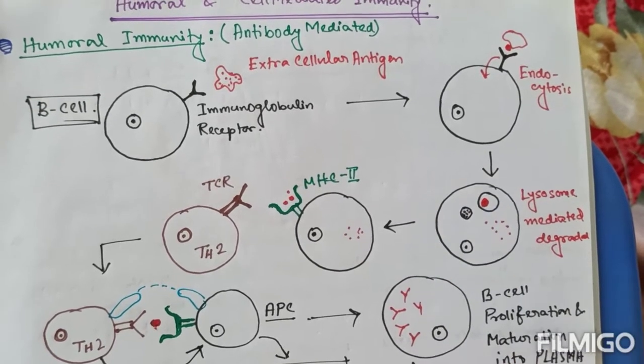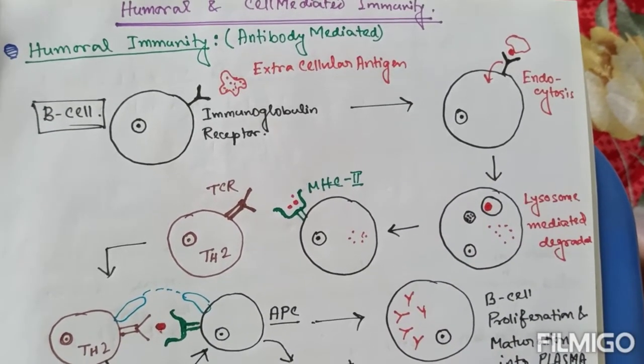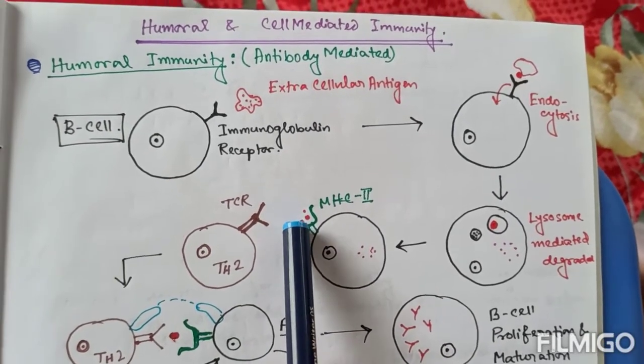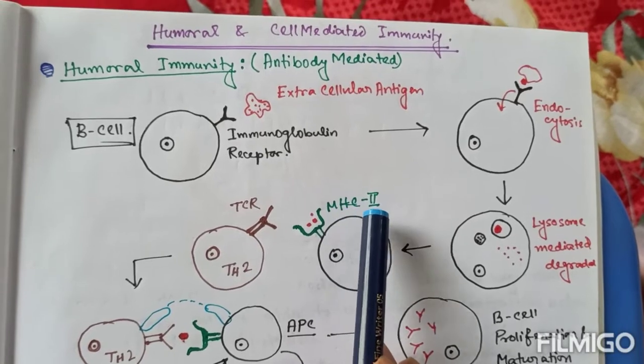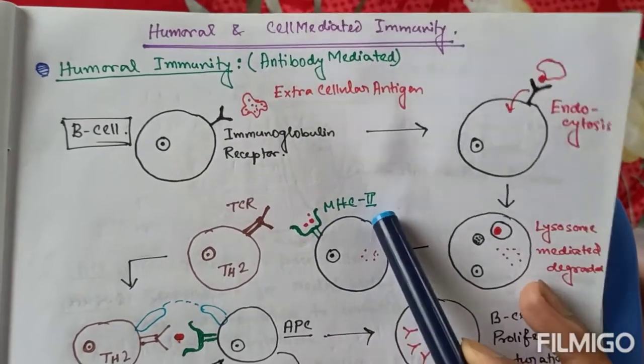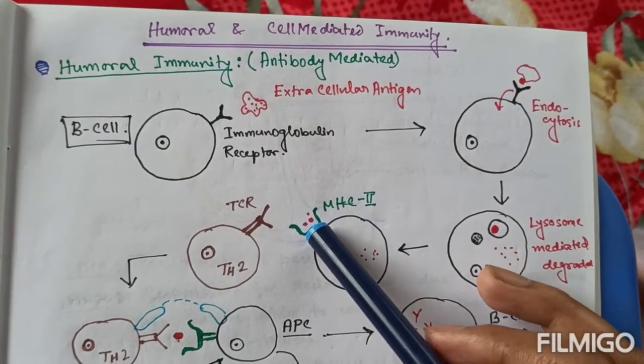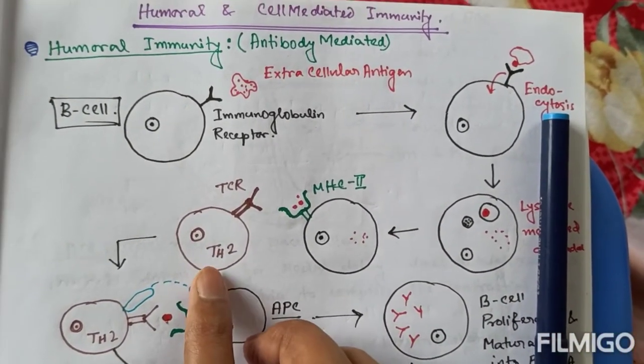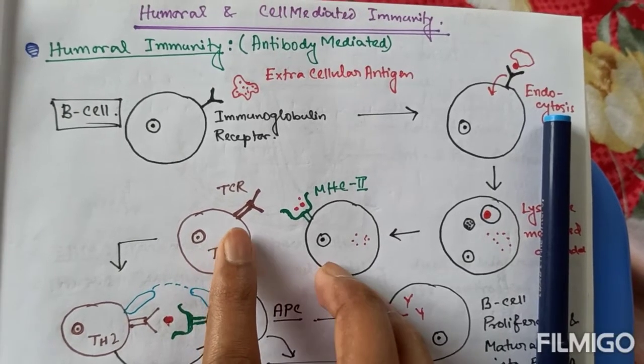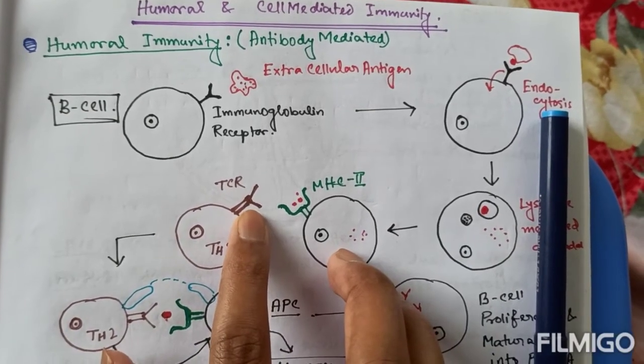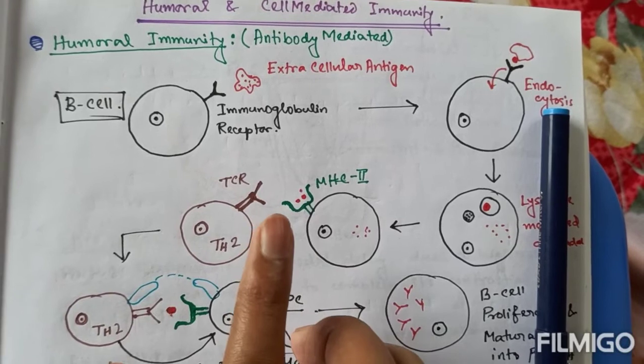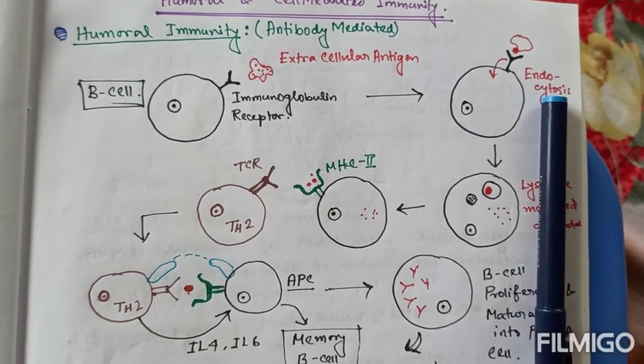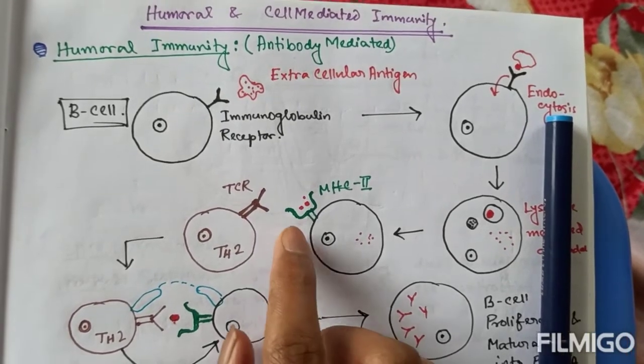And it gets degraded into various peptides. And one of these peptides is recognized by the MHC type II. And this is showcased to the helper T-cell type II by TCR. TCR or T-cell receptor can identify the external antigen with the help of MHC.